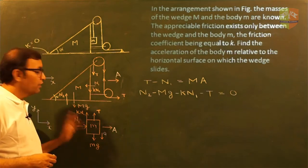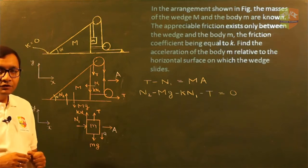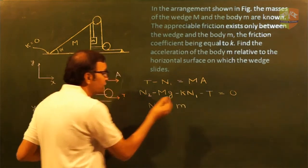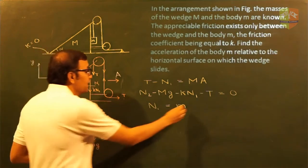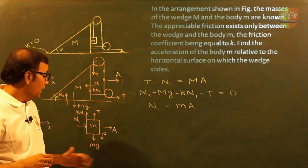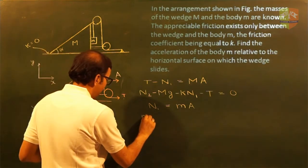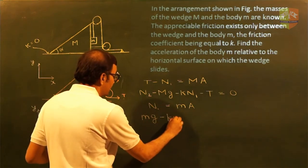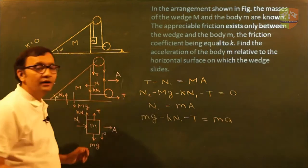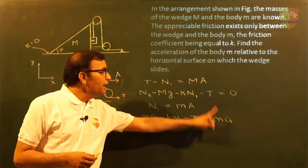Now let us write equations of motion for small m. Along the x-axis, the only horizontal force is N1, so N1 equals m times capital A. Along the y-axis, we have mg downward, friction KN1 upward, and tension T upward, so the equation is: mg minus KN1 minus T equals m times small a.